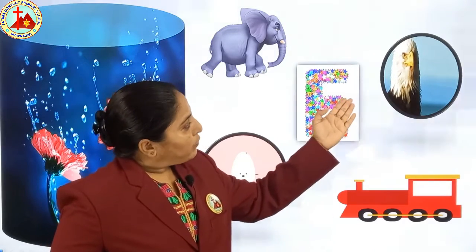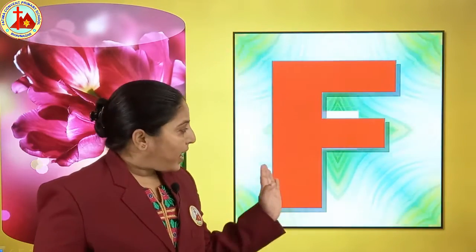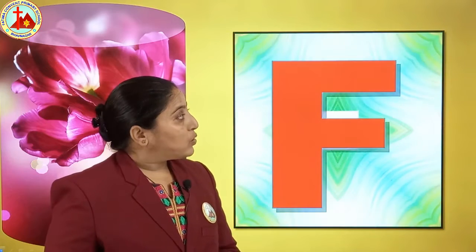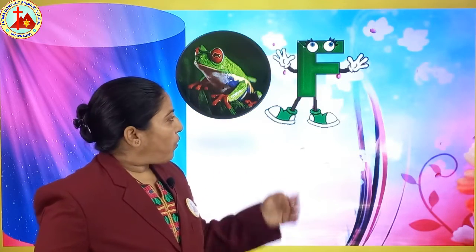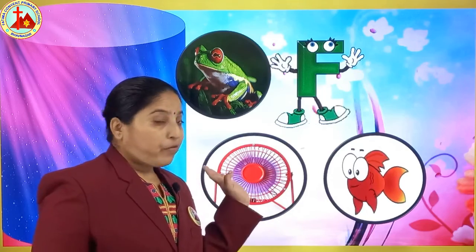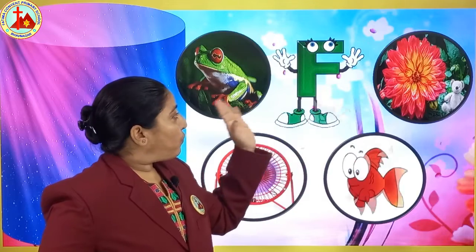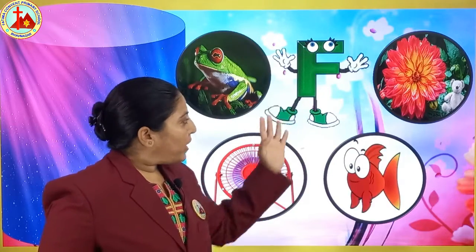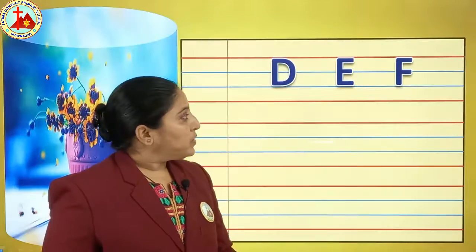Now what is next? After E, which letter comes? Yes, letter F. So let's see the pictures related to letter F. F for frog, F for fish, F for fan, and F for flower.